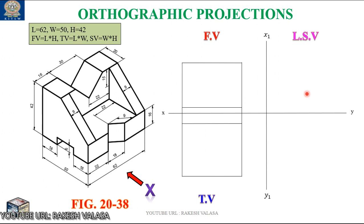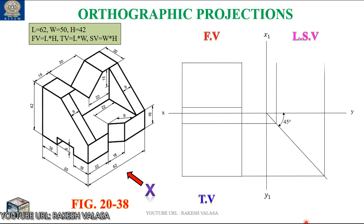Next, draw the side view rectangle box. For constructing the side view rectangle box, the side view dimensions are 50 and 42. But no need to take dimensions directly — we have one procedure. First, we need to draw the 45-degree line at the intersection of XY and X1, Y1. From this point, draw the 45-degree line. Now draw the horizontal projectors from the top view to the 45-degree line. Next, draw the vertical projectors from that point. Similarly, draw the horizontal projectors from the front view. Now we can get the rectangle box for the side view. This is the rectangle box for side view — this is the width (50 mm) and this is the height (42 mm).